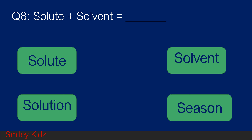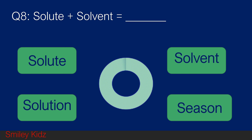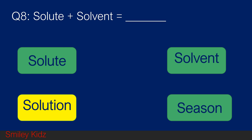Question number 8. Solute plus solvent is equal to blank. Option A solute, option B solvent, option C solution, and option D none. Your time starts now. And your time is up. The right answer is solution. Solute plus solvent is equal to solution.